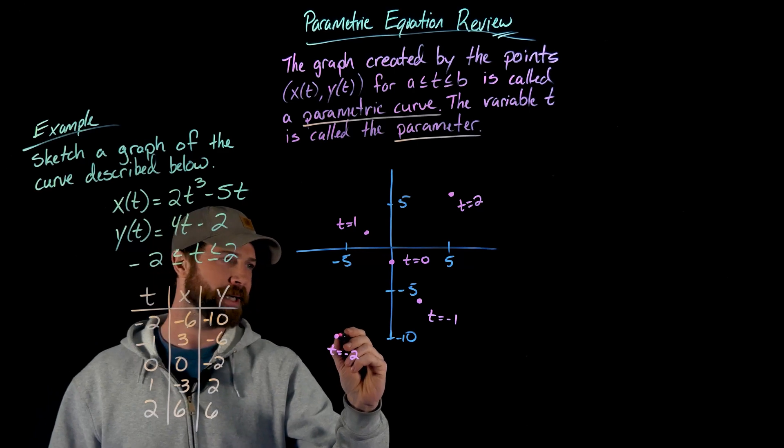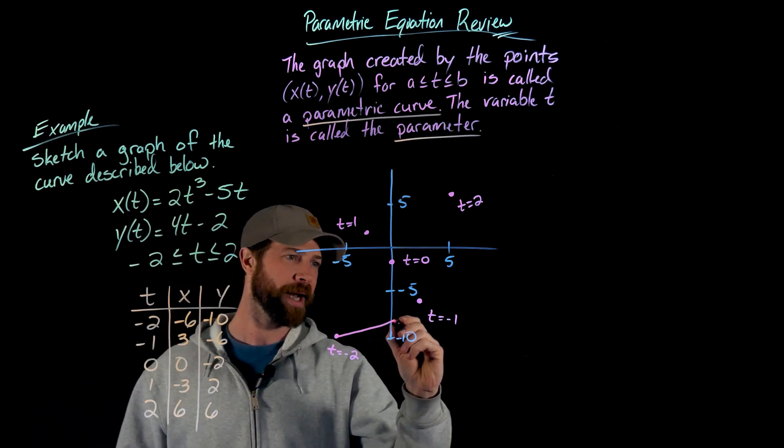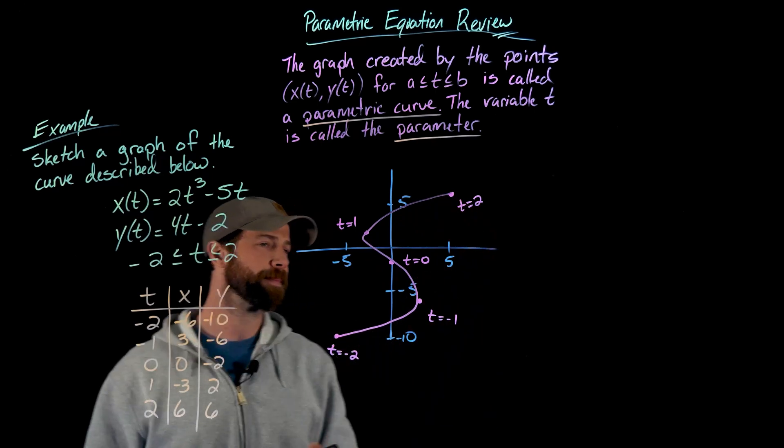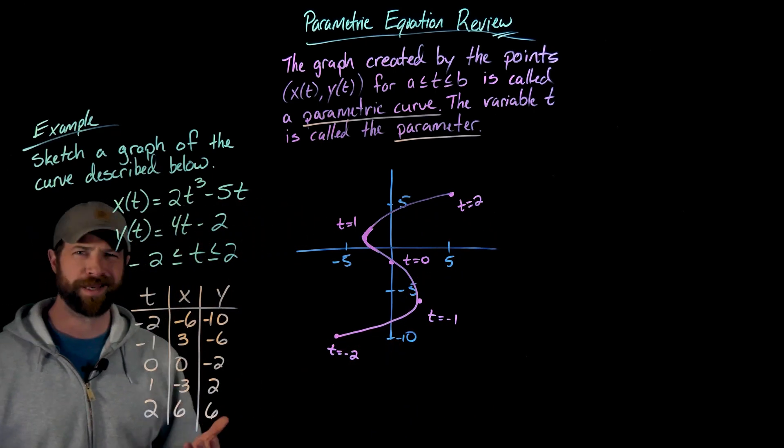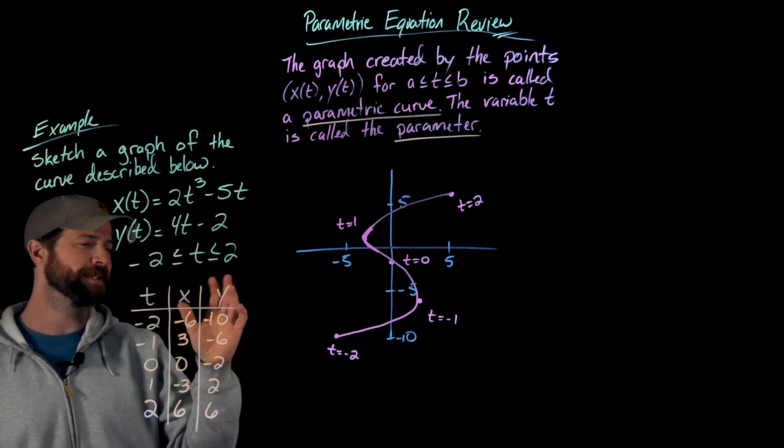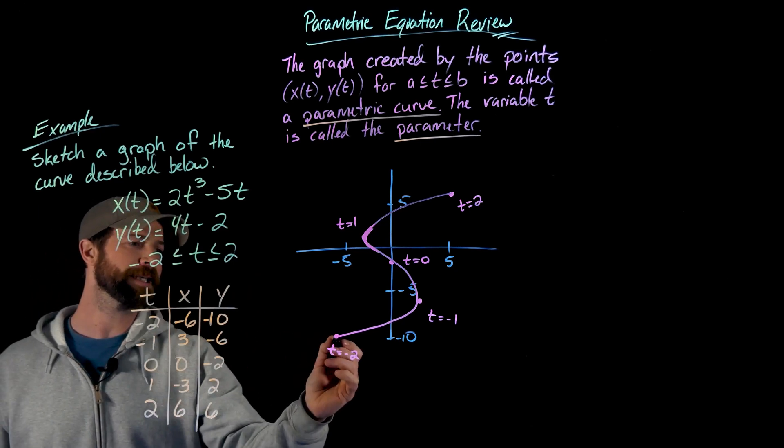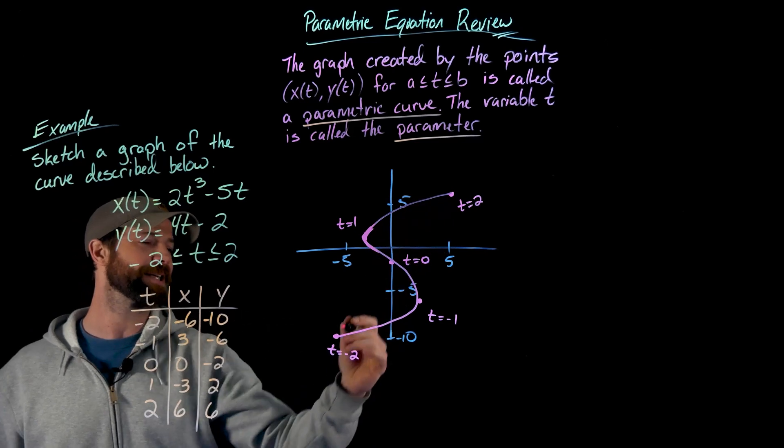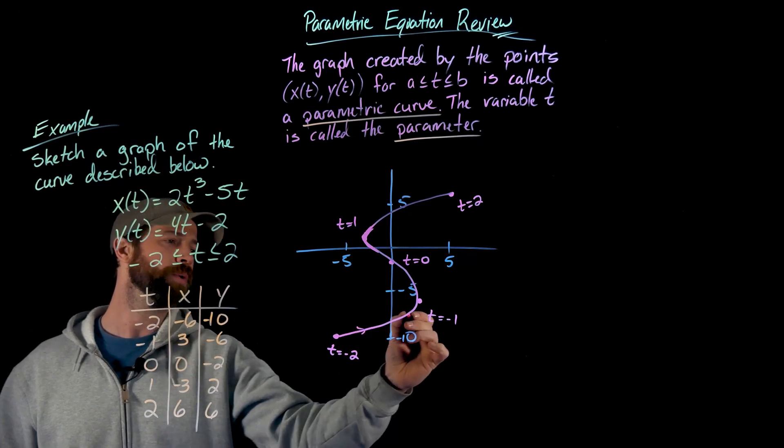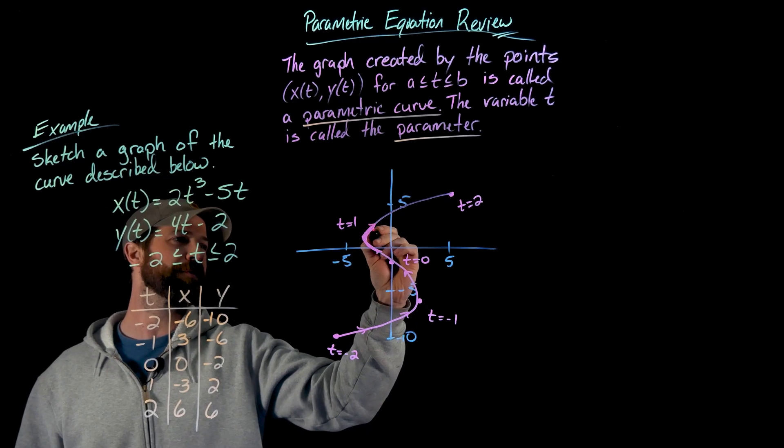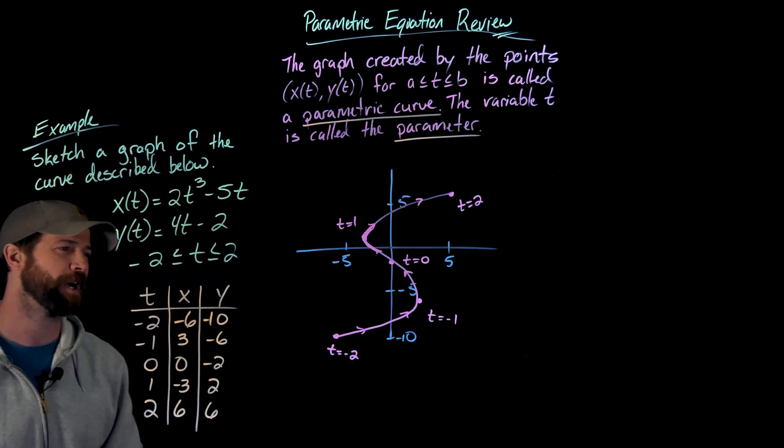So my journey starts right here at t equals negative two, and then I'm just going to journey through these points. And then importantly to this conversation is the fact that this graph importantly has direction. It starts here at negative two and then ends at two right there, and so we'll often throw in these arrows which describes the flow or the path of this parametric curve.